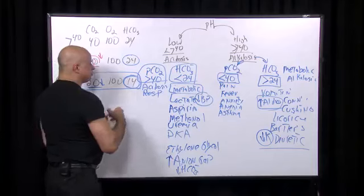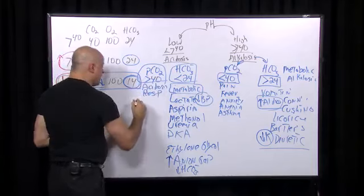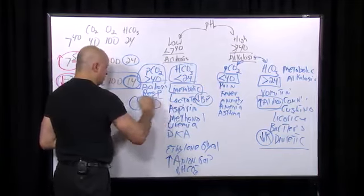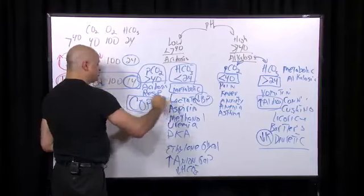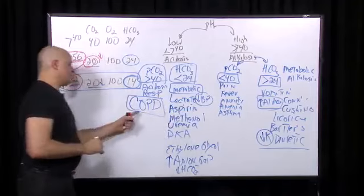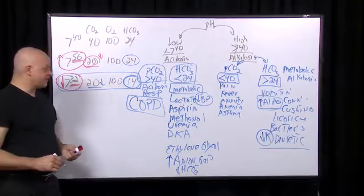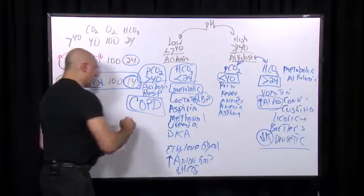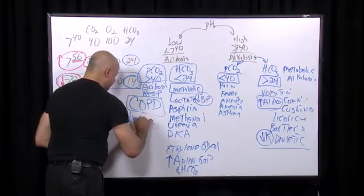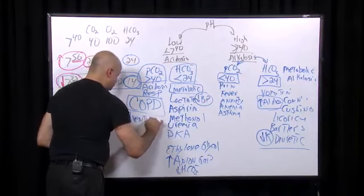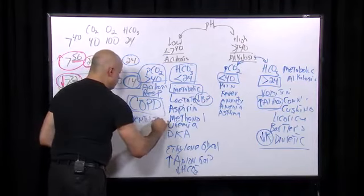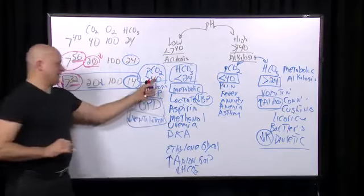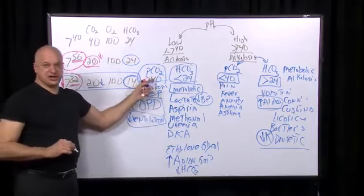If the CO2 is high, the primary problem is a respiratory acidosis. The most common cause is COPD and emphysema, but anything that causes decreased ventilation will cause an elevated pCO2.